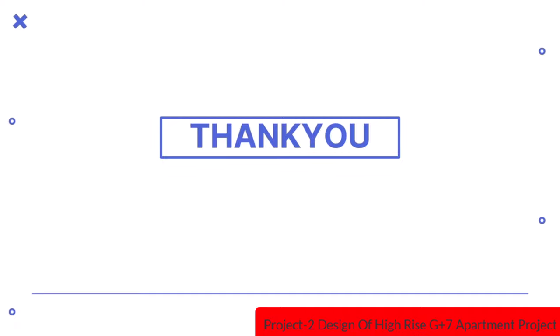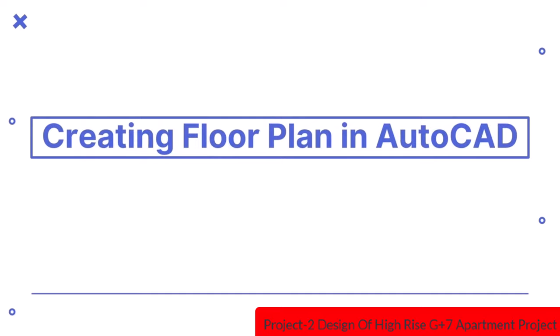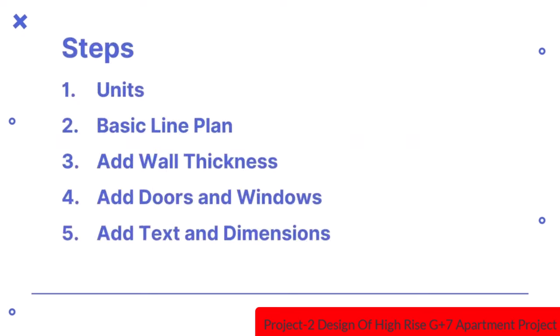In this video, we will learn how to create floor plans in AutoCAD. The steps we will follow are: first, check that we have selected the correct units; draw a basic line plan; add wall thickness to it; add doors and windows; and lastly, add text and dimensions for each of the rooms.